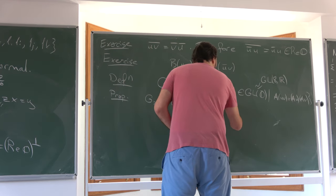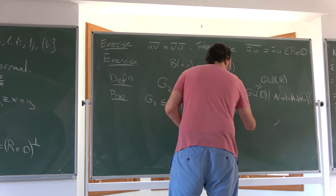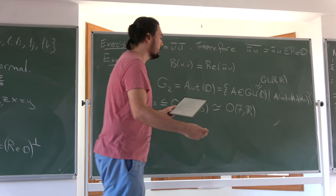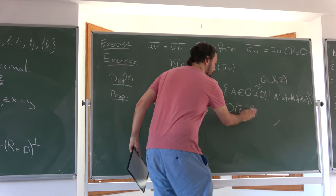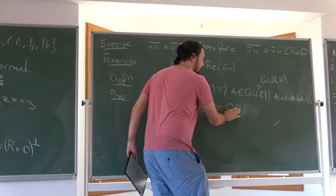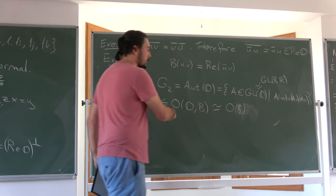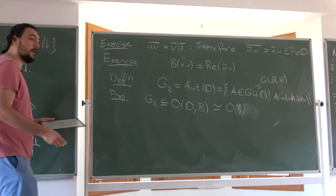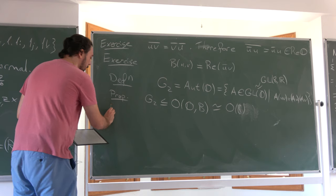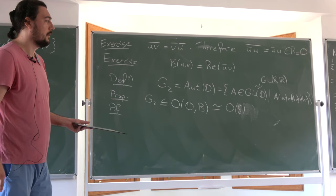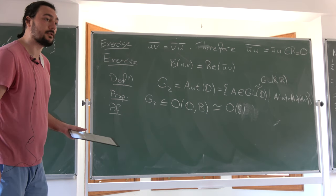Now the topological result: the set of all G2 triples, and therefore G2 itself, is an S3 fibration over the Stiefel manifold V_{2,7} of orthonormal two-frames in seven-dimensional space. To see this: U can be any unit vector in the imaginary Octonians — that's a six-dimensional sphere S6 worth of choices. Then V can be any unit vector perpendicular to U — that's S5 worth of choices, giving V_{2,7} as the base.